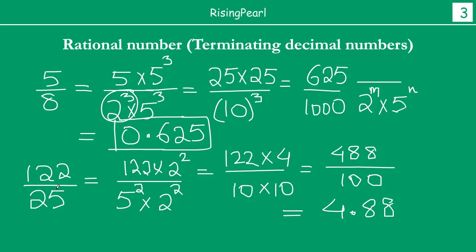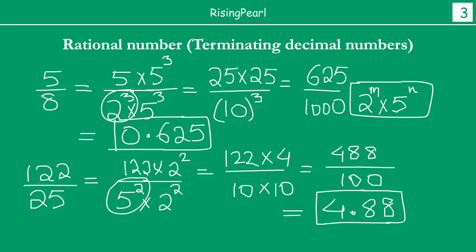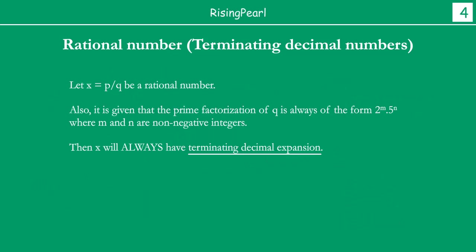And again, we started with a denominator of 5 squared — of this form — and what we got is a terminating decimal number. So friends, it is no surprise that if we have x given in the form p by q, and the prime factorization of q is of the form 2 to the power m times 5 to the power n, then without doing the actual long division, we can say that x will always have a terminating decimal expansion.